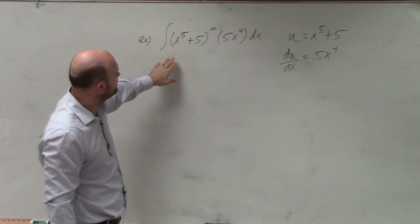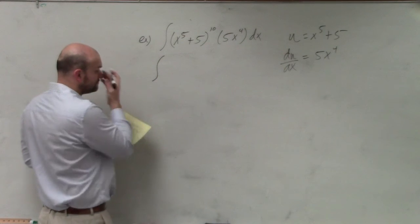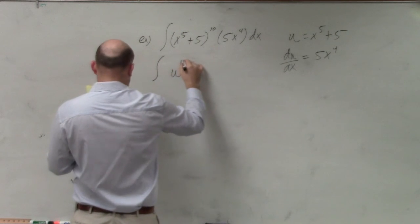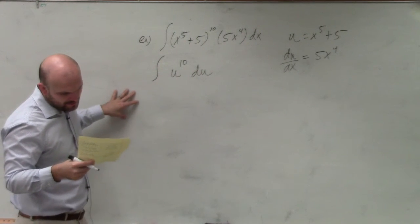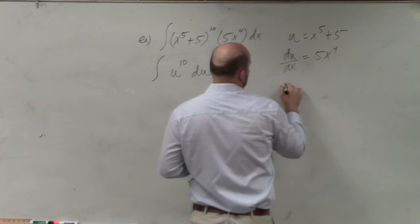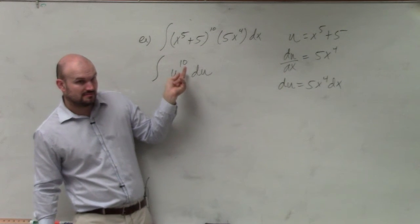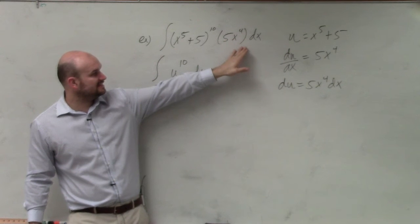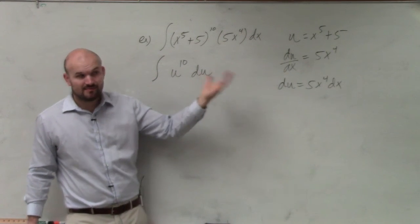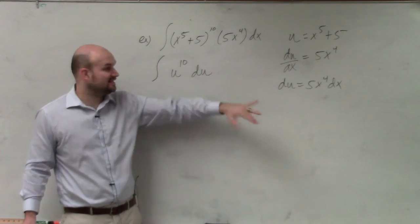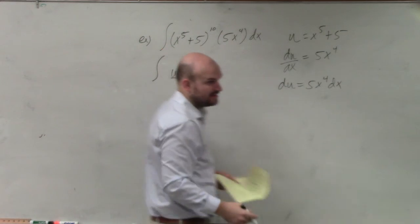So integrating this — what we can look at this as is integrating u to the 10th. I can re-represent this as u to the 10th, and this can then be represented by 5x to the 4th dx. Now remember, if this doesn't apply — if this isn't the same — we can't use our u-substitution. That's why I just want to make sure you guys can see how my u to the 10th and my du are represented right there.